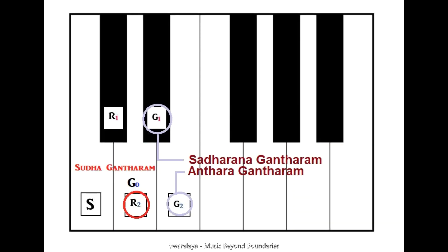Let's see Gaantaram. We know Ga 1 is named Shadarana Gaantaram and Ga 2 is Antara Gaantaram. Now the previous note before Ga is Ri 2, that is Chattu Shruti Rishabham. So this Ri 2 will be given another name and symbol. Chattu Shruti Rishabham is otherwise called Shuddha Gaantaram.